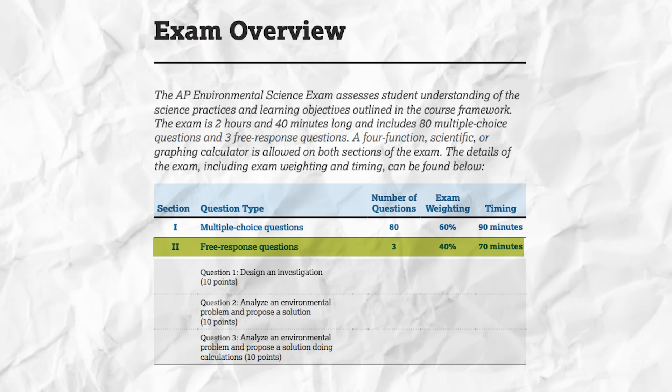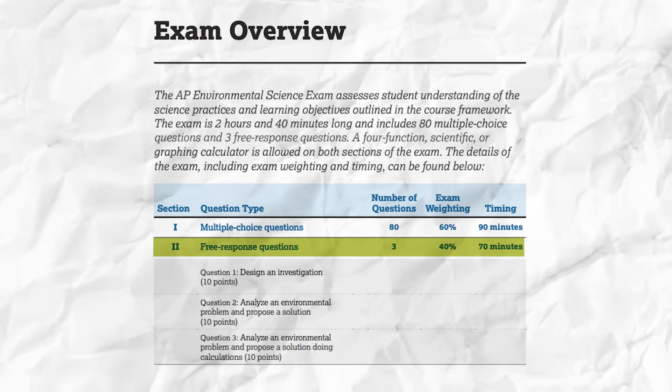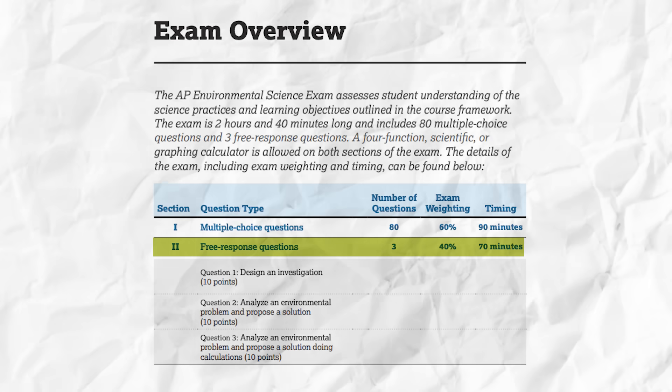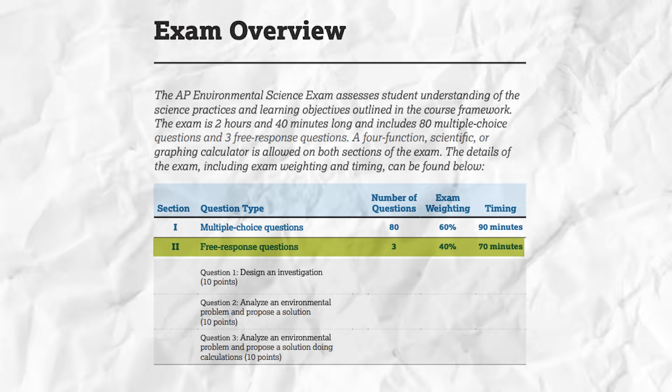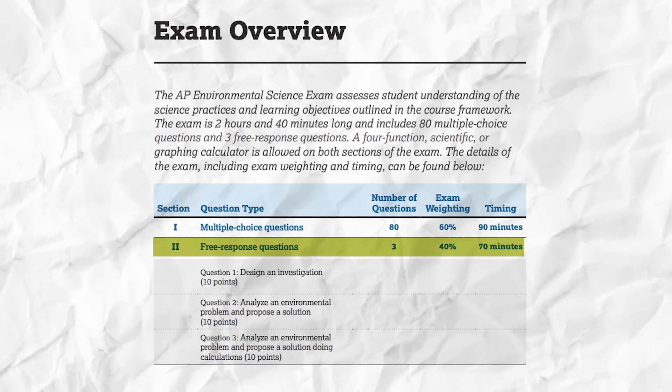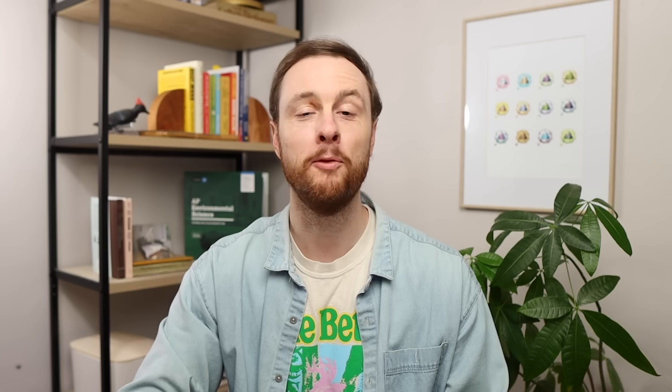In terms of structure, the FRQ section has three separate FRQs, each with 10 possible points, and you'll have 70 minutes to answer them. Now before we get into the specific structure of each of these three FRQs, it's really important to establish two critical pieces of strategy on the FRQ section.